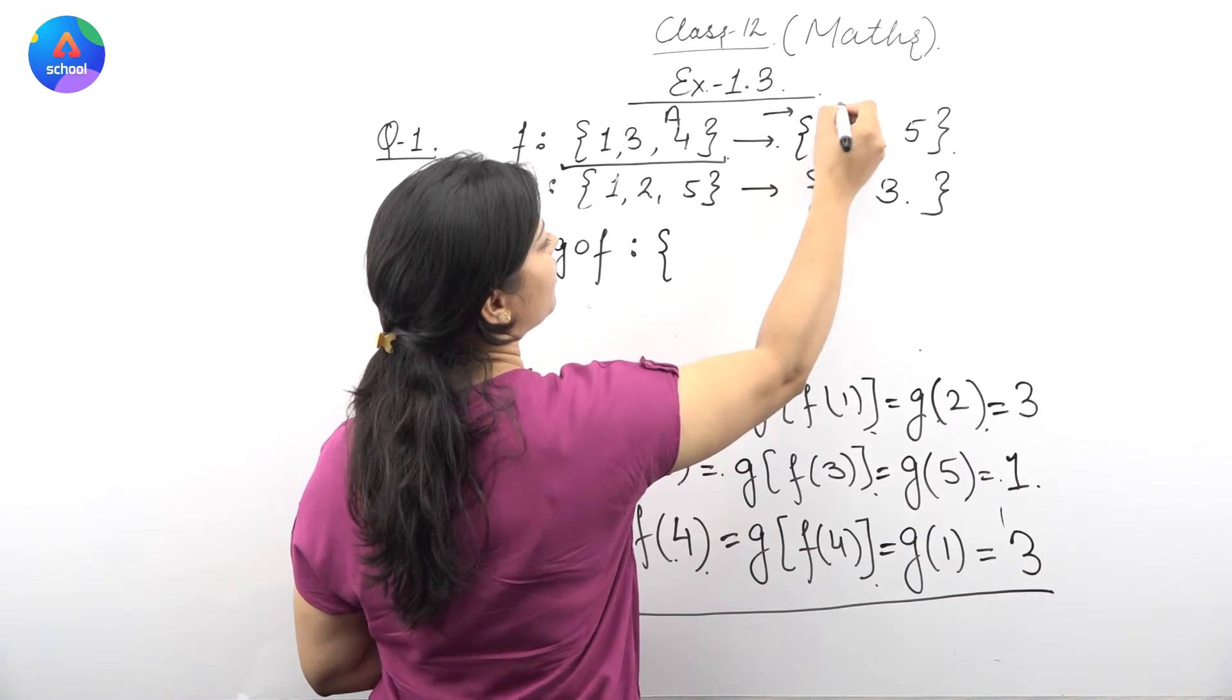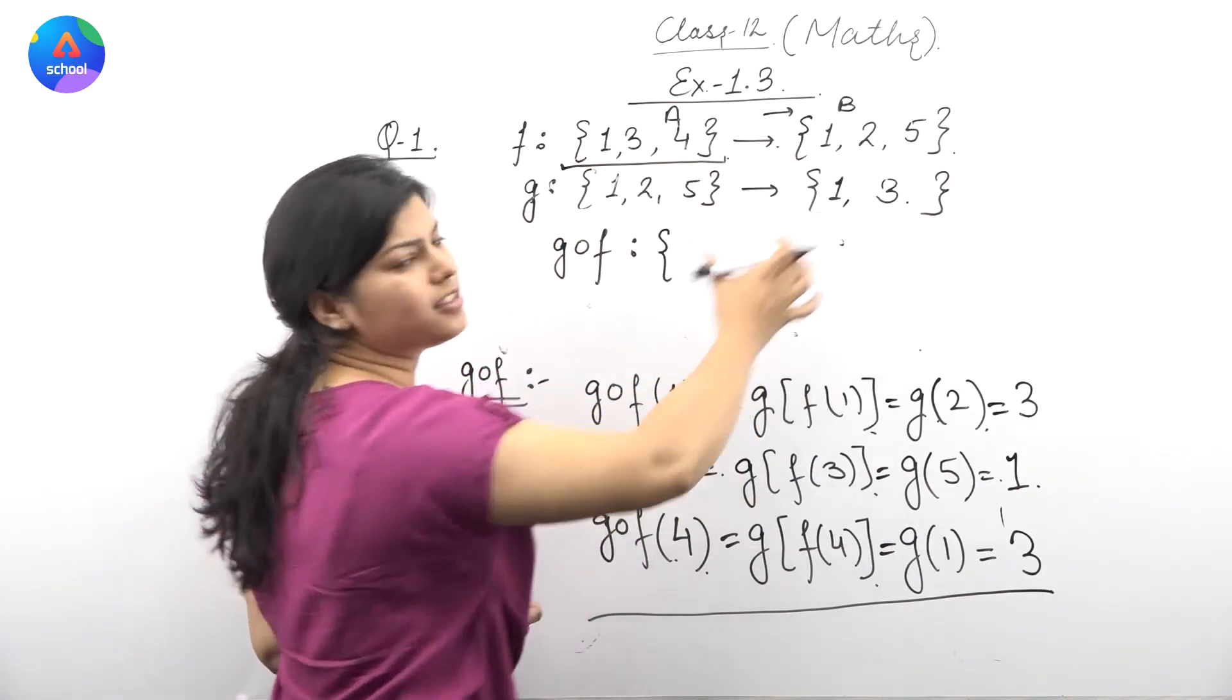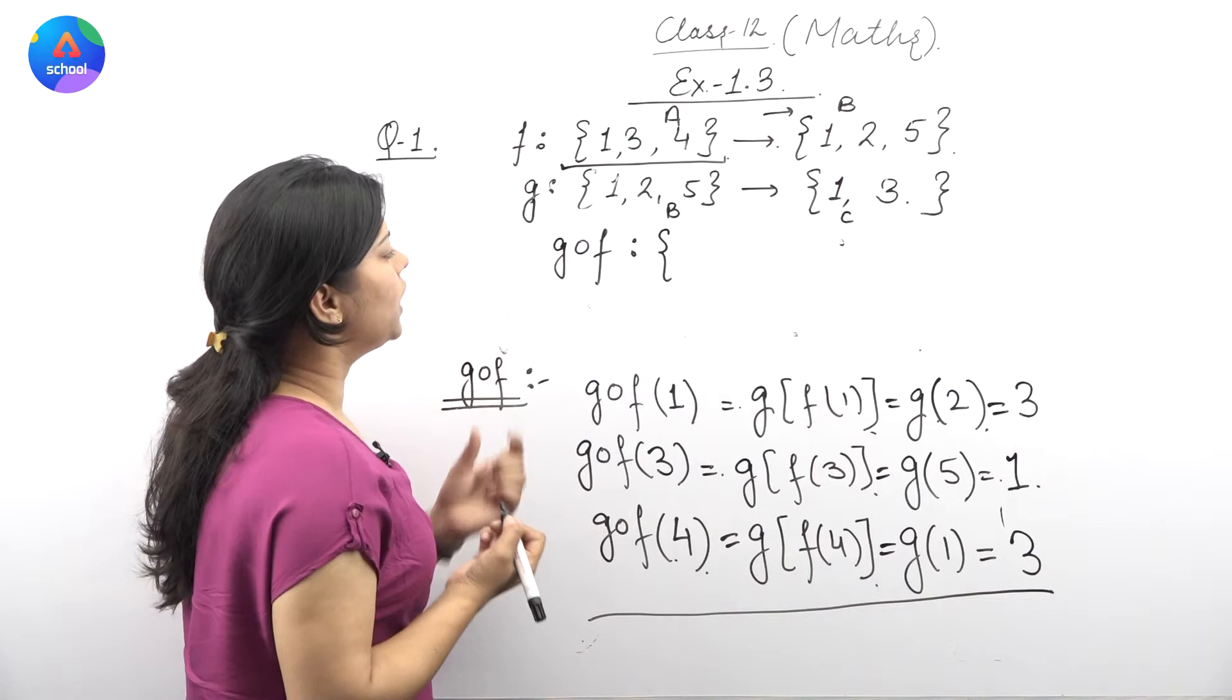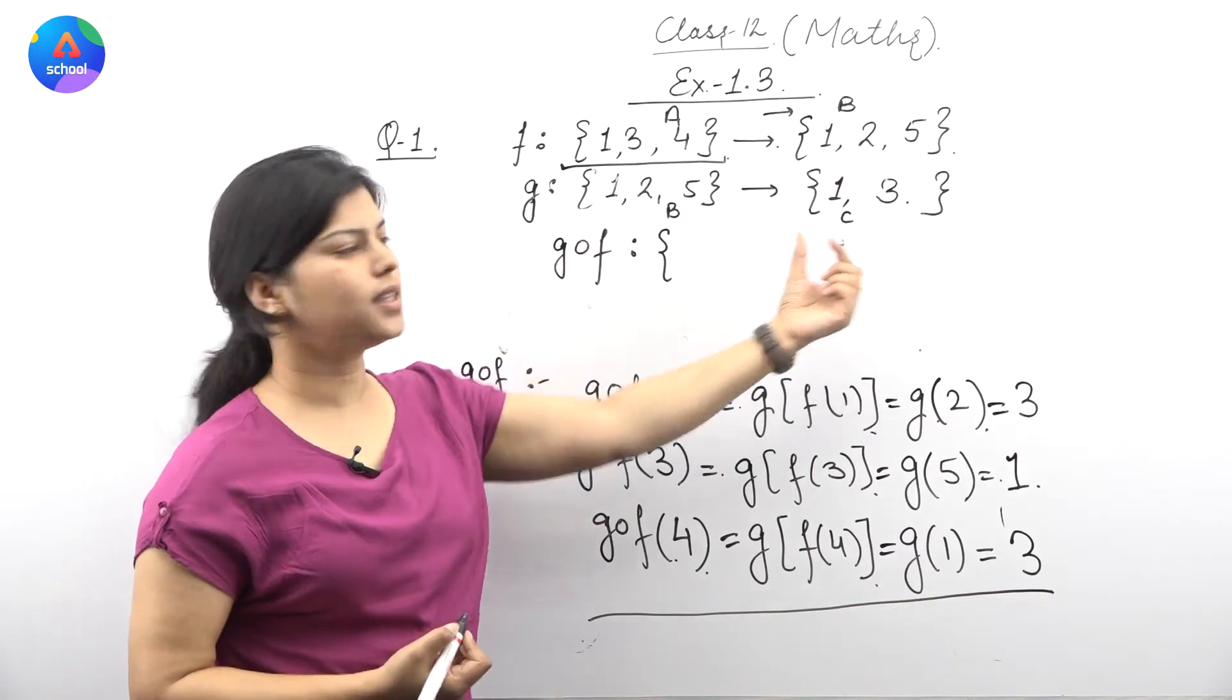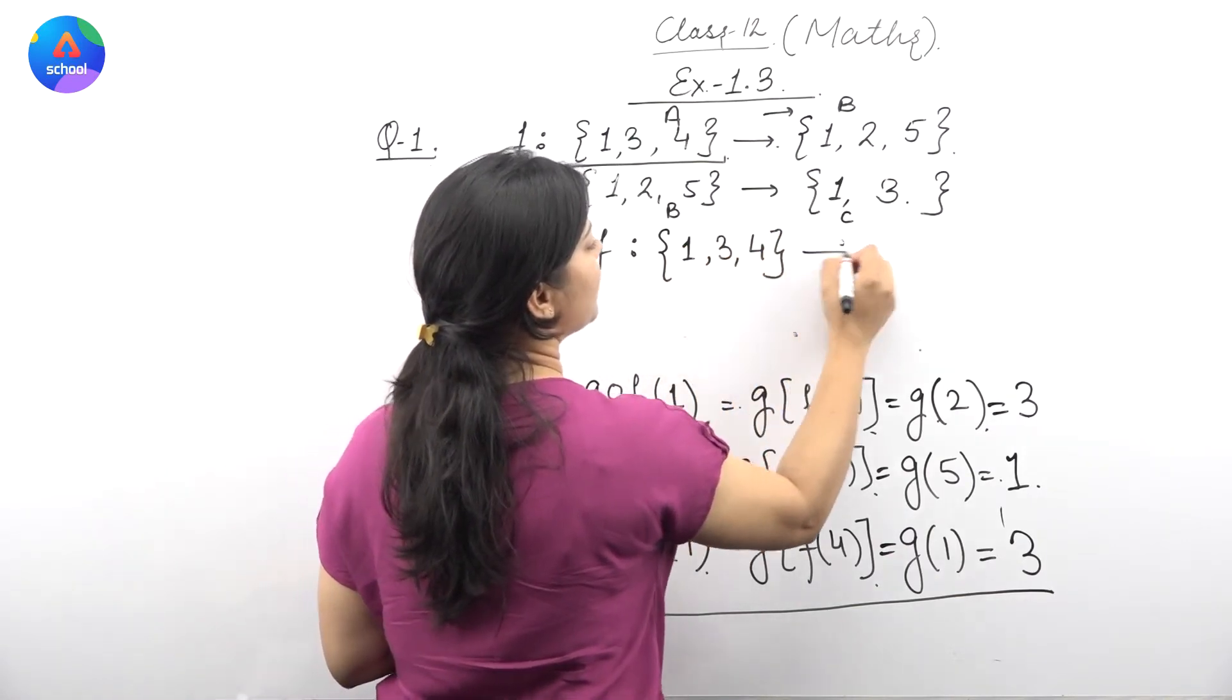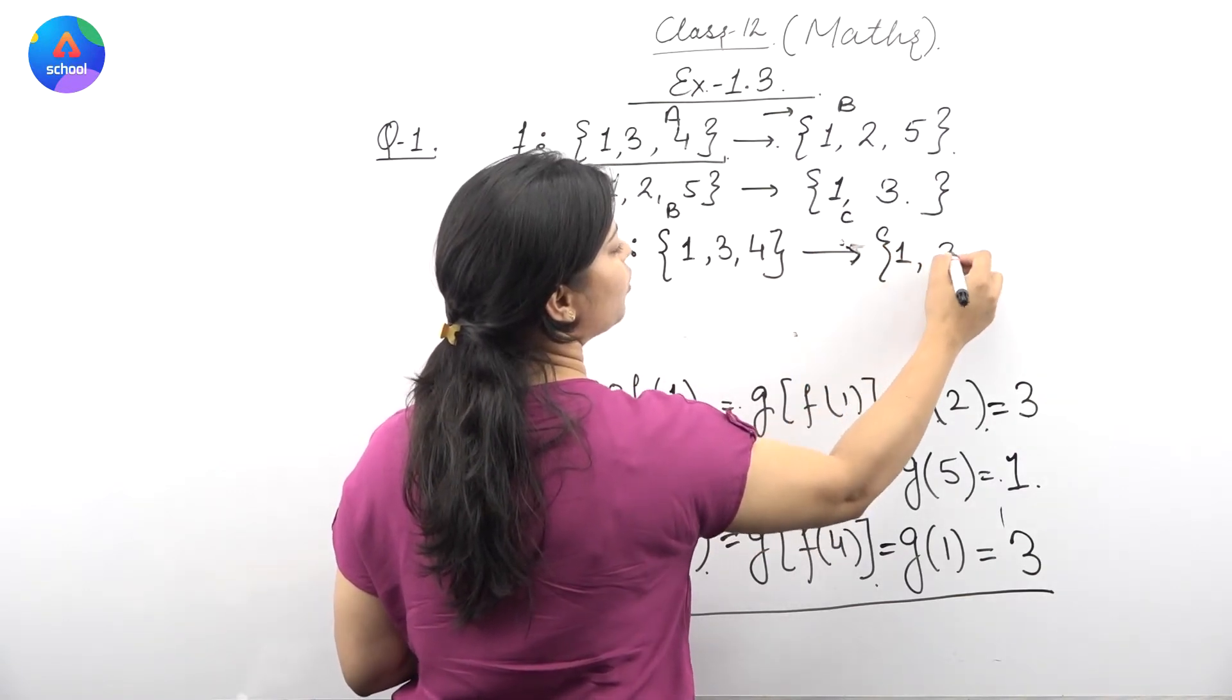From which set to which set will this be? One thing to note: if F is from set A to set B, and G is from set B to set C, then g∘f will be from set A to set C. So set A {1, 3, 4} to set C {1, 3}.